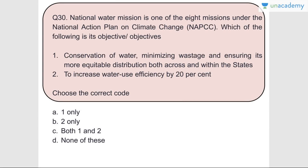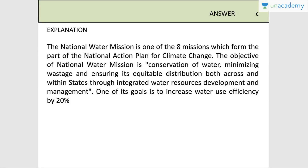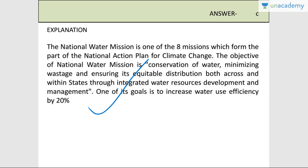Question number thirty: National Water Mission is one of the eight missions under NAPCC. Which of the following are objectives of the National Water Mission? Conservation of water and minimizing wastage, ensuring more equitable distribution both across and within states - correct. To increase water use efficiency by 20% - also correct. Answer is C, both one and two. The National Water Mission is one of eight missions under the National Action Plan for Climate Change, with the objective of conservation, minimizing wastage, equitable distribution through integrated water resource development and management, and increasing water use efficiency by 20%.